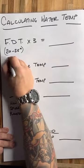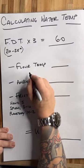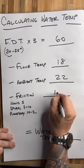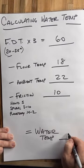Now, I'm going to give you an example here. I'm going to use 20 degrees times 3 is 60. 18 degrees flour, 22 degrees ambient, 10 degrees friction, and I got a water temperature of 10.